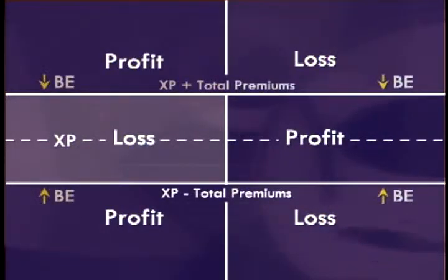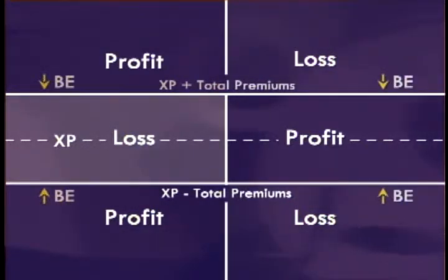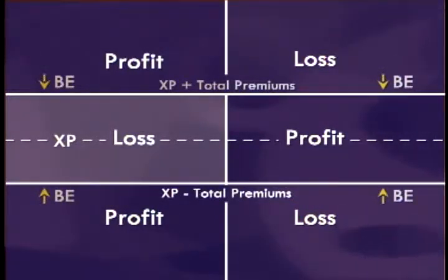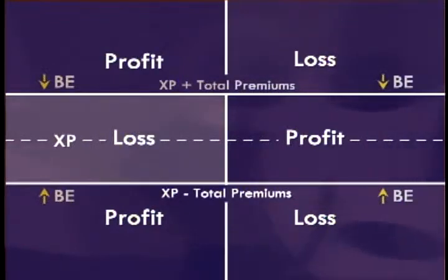In the long straddle, you wanted the stock to be above or below the break-even points. For the short straddle, you want the stock to be between those two break-even points. Losses and gains are exactly the opposite as well. How much money can you make in a long straddle? Theoretically unlimited as the stock rose. So how much money could you lose in a short straddle? Theoretically unlimited as the stock rises.